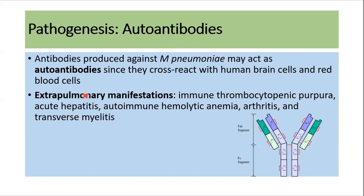The next pathogenesis factor involves autoantibodies. When antibodies are produced against Mycoplasma pneumoniae, they may act as autoantibodies since they cross-react with human brain cells and red blood cells. This can lead to extra-pulmonary manifestations such as immune thrombocytopenia and transverse myelitis.